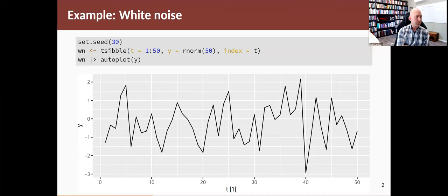We create a tibble going from time 1 to 50 and just random normally distributed values. I set the index to be the T variable and then plotted it. That's an example of white noise. There's no particular patterns, it's simply random values.